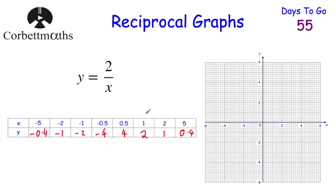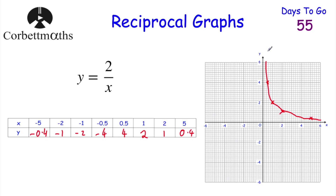So we've got our points — let's plot them. (5, 0.4) would be here, (2, 1) would be here, (1, 2) would be here, and (0.5, 4) would be here. If we draw a curve through them — it's not the best on the computer — but that's roughly what my curve would look like. As you can see, it approaches the x-axis and approaches the y-axis but never reaches them.